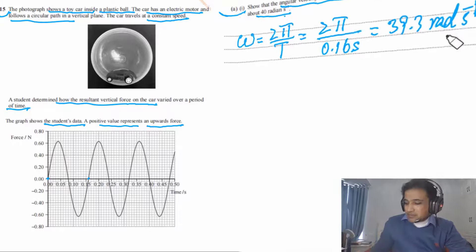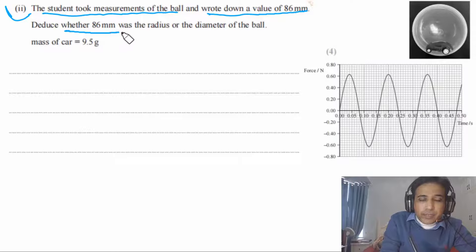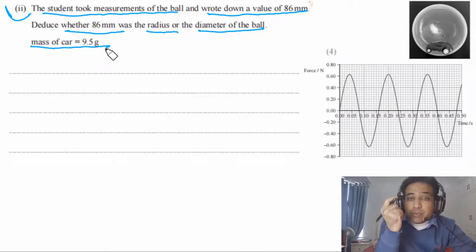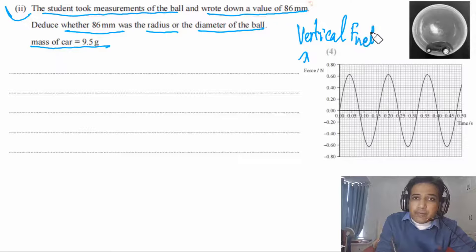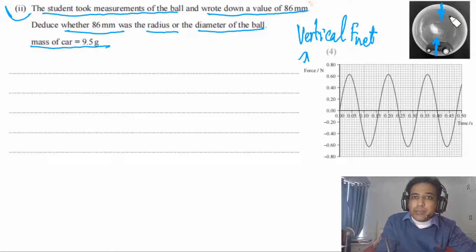Part b: deduce whether 86 mm is the radius or diameter of the ball. Mass of car = 9.5 g. The vertical net force equals the centripetal force at the top and bottom. From the graph, the maximum net vertical force is about 0.63 N. Using F = mrω²: r = F/(mω²) = 0.63 / (9.5 × 10⁻³ × 39.3²) = 0.044 m = 44 mm.